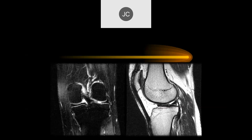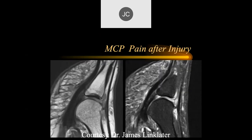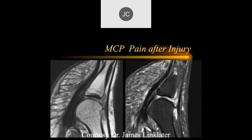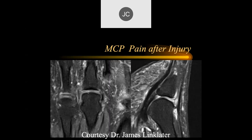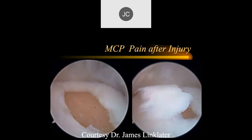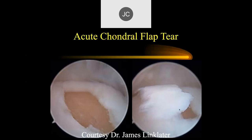Here's another example of a full thickness, relatively acute defect. In this case, there's really no underlying bone edema. The patient had MCP pain after injury. It looks like there may be a full thickness fissure — really hard to see. But this patient went to arthroscopy, and there was an unstable defect. When they peeled it up, there was a big defect — and when debrided, it was a fairly large lesion. This was significantly under-visualized on the MR examination — an acute flap tear.